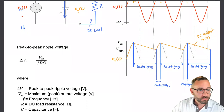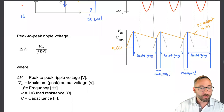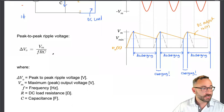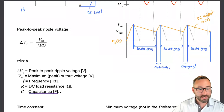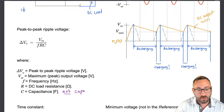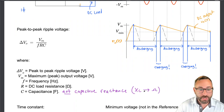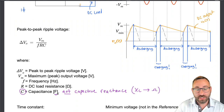Here's the peak-to-peak ripple voltage formula available in the reference handbook: delta VO(t) equals VM divided by frequency times resistance times capacitance. VM is maximum voltage, f is frequency, R is DC resistance, and C is capacitance. Be really careful: capacitance is NOT capacitive reactance. Capacitive reactance is XC in ohms — the imaginary component of impedance. This is capacitance C in units of farads. You can do everything right, but if you use capacitive reactance in ohms instead of capacitance in farads, you'll get the problem wrong.